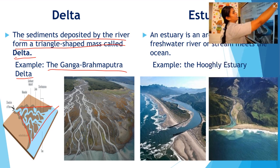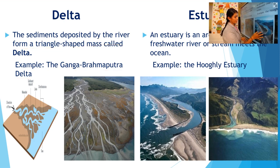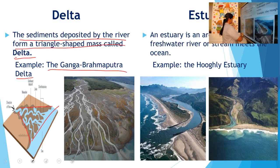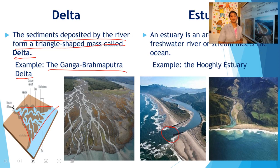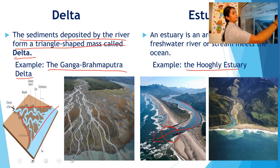Next is estuary. Sometimes rivers do not form deltas — they directly enter into the sea without dividing themselves. The wide area where the freshwater river enters into the sea is known as an estuary. For example, Hooghly estuary. Hooghly is a river in India.